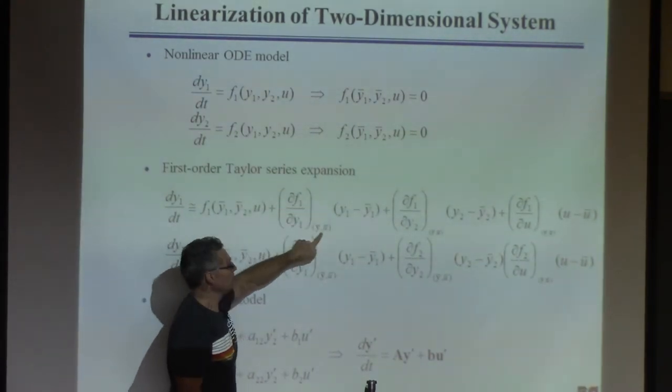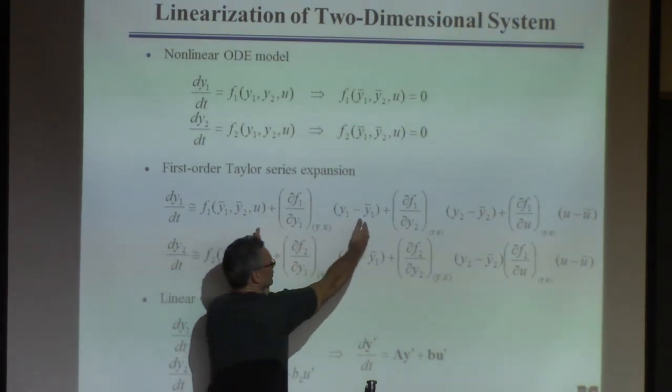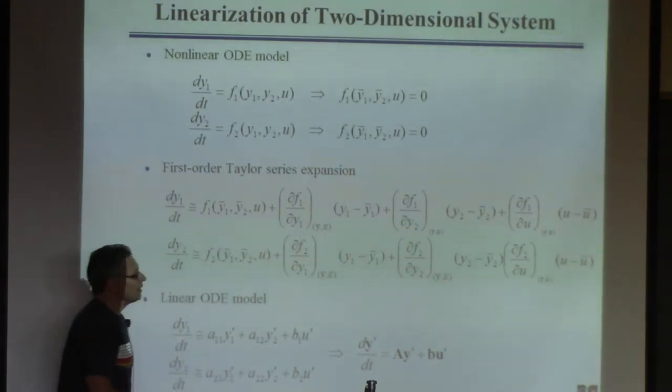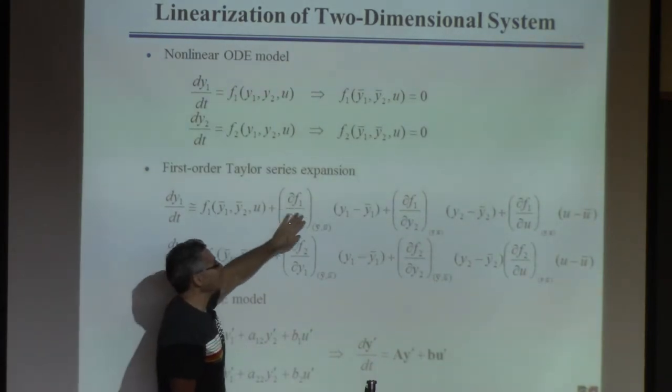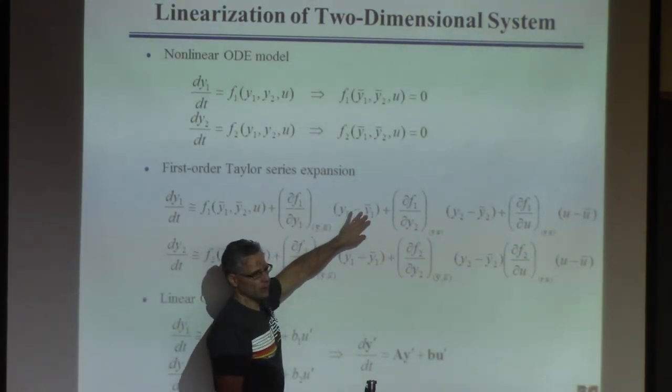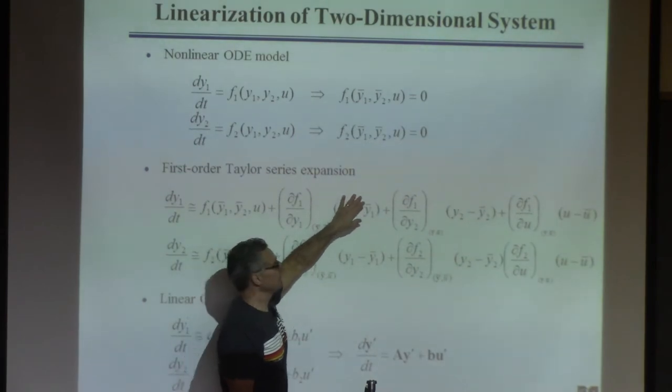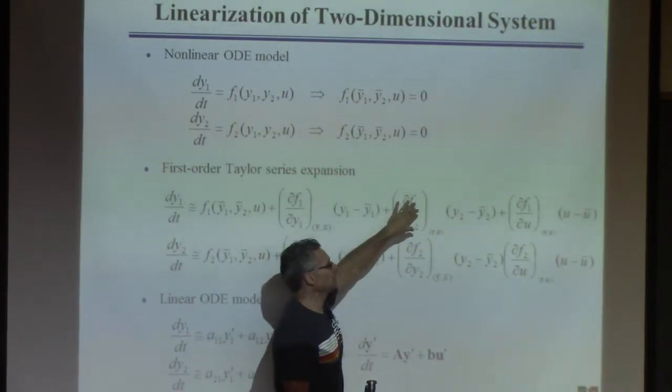That's what the difference is. Y bar here is a vector, because I didn't want to write something so long. Evaluate that at the steady state, and then you'll get some numbers here. Multiply that times y1 minus y1 bar, also known as y1 prime. Do the same thing with y2. Do the same thing with u.